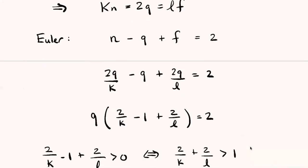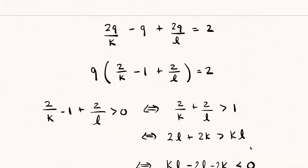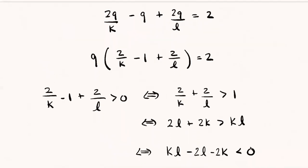Factor out a q. You can stop the video and check my algebra if you like. Factor out a q. And then what do I know? Well, if q times this quantity is equal to 2, q is the size of a graph. This quantity has to be a positive number. The parenthesized expression can't be zero or negative. Otherwise there's no way q times it could equal 2. So I'm taking that quantity, 2/K - 1 + 2/L, has got to be greater than zero.